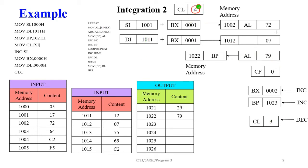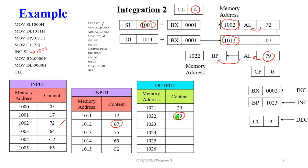Second iteration: CL is 4. SI is still 1001, BX is now 0001, so memory address = 1002. Value at 1002 is 72, moved into AL. DI (1011) + BX (0001) = 1012. Memory location 1012 contains 07. Adding 07 to 72 gives 79. The answer 79 is stored in AL, then moved to base pointer memory location 1022. CF is 0. BX incremented to 002, BP to 1023, CL decremented to 3.